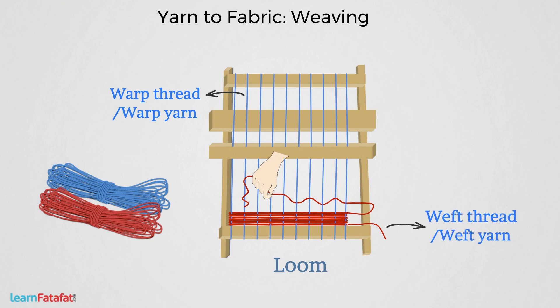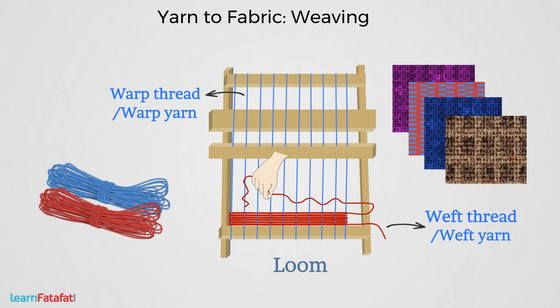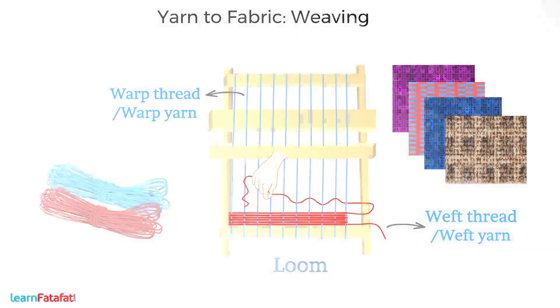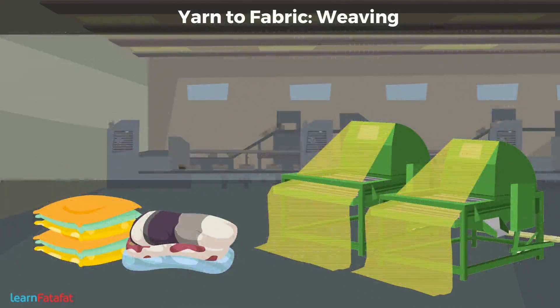With weft thread, it is possible to create different patterns and designs in the weave, and therefore different designs in the fabric. In hand looms, weft thread is inserted by hands. However, use of machines helps us to make the process faster.